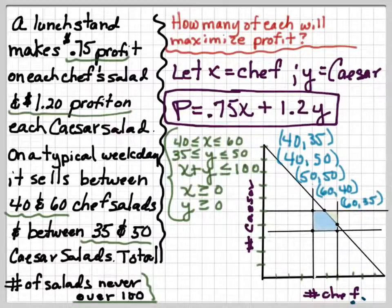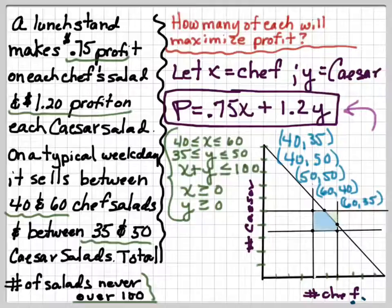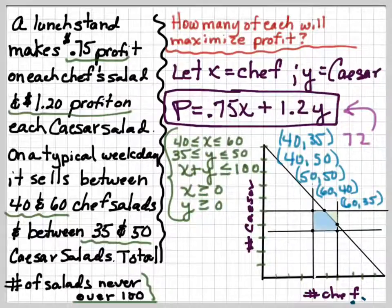So the last thing I have to do is plug in to my profit function, 0.75x plus 1.2y, and solve and see which one comes out the biggest. Now please make sure that you can use a calculator to get these right answers. Because you can get all this way and make an arithmetic mistake and get the wrong final answer. So for 40, 35 has a value of 72. For 40, 50 has a value of 90.